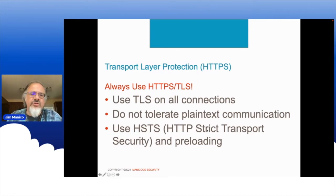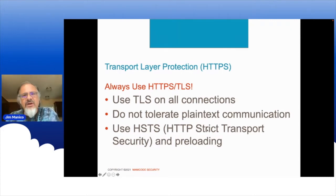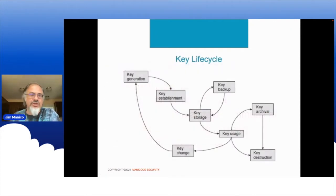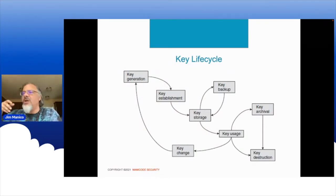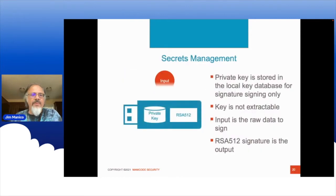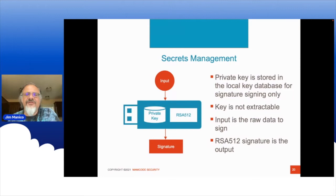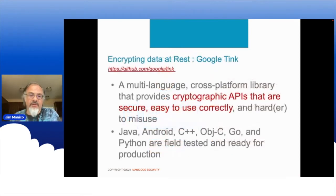We also want to use strict transport security and commit to having it well-configured everywhere we're doing application transport. Another part of crypto is key lifecycle: generation, establishment, storage, recycling, and changing of keys. We want to get this right, and it's all about having a secrets management solution. We're not sticking keys on servers or in databases anymore — we have formal cryptographic vaults and we should use them, though they are difficult to use.